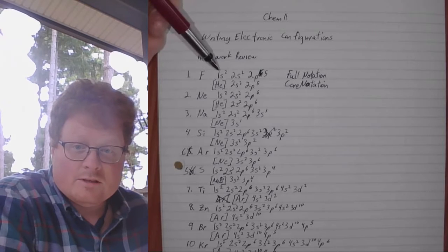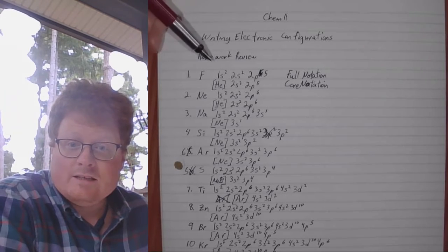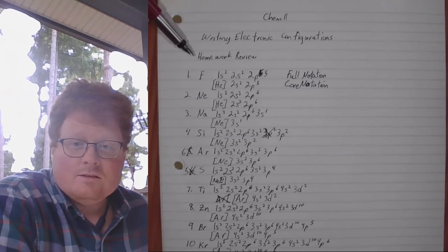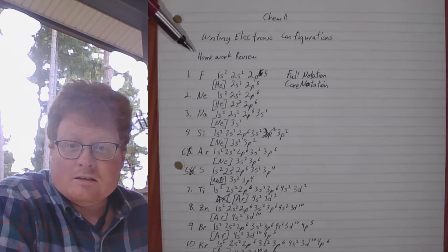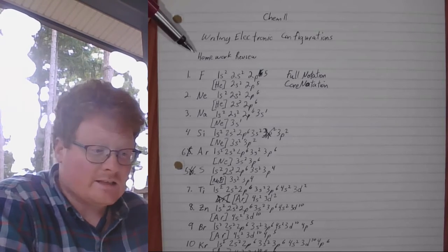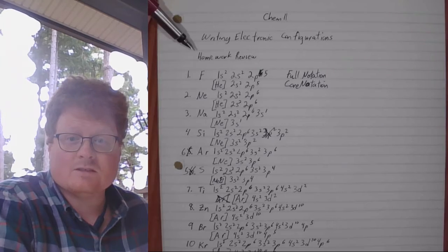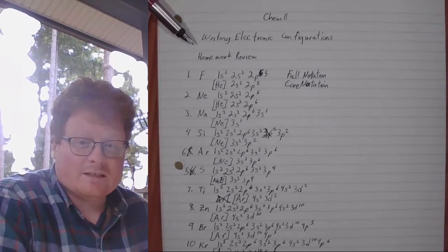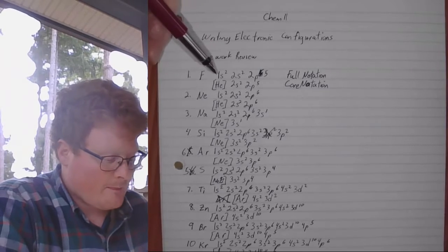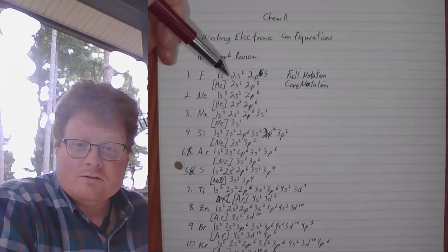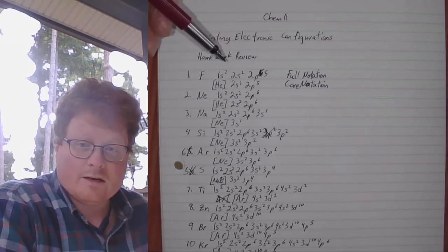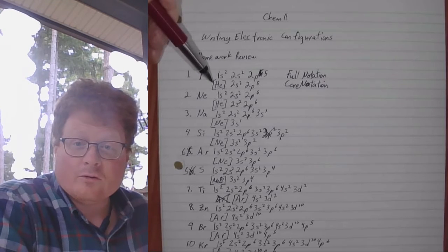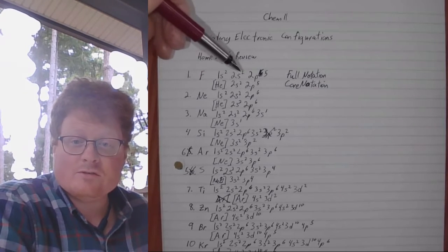So fluorine. 1S2. It's in the second row, near the end. It's actually in the halogen section. We'll talk about halogens, alkali, alkaline earth metals, transition metals, lanthanides, actinides, those types of things. I'll mention them today briefly. Page 292 in Chapter 6. 1S2, 2S2, 2P5. Or we could write it in the core notation helium 2S2, 2P5.